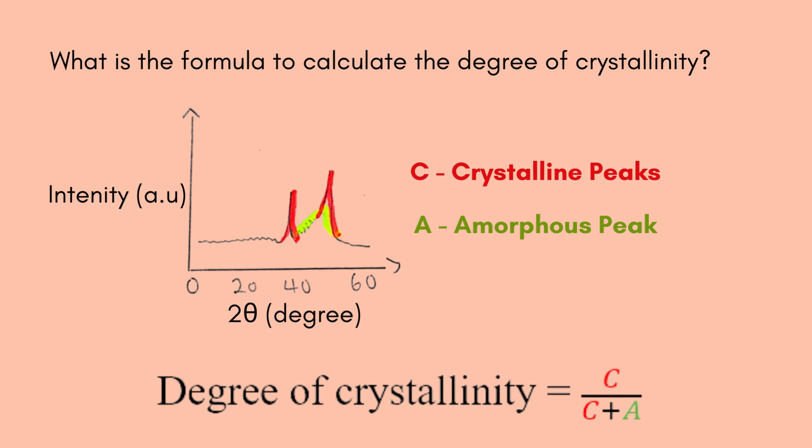What is the formula to calculate the degree of crystallinity? Crystallinity from XRD scans is determined by drawing an amorphous halo to separate the crystalline peaks from the amorphous scattering, and by calculating the ratio of the areas of the crystalline peaks to the total area — that is, the crystalline peak area divided by the sum of the amorphous peak area and crystalline peak areas.